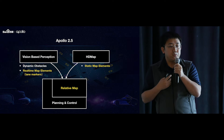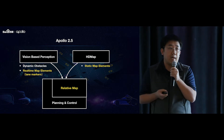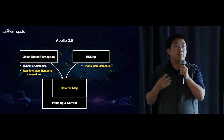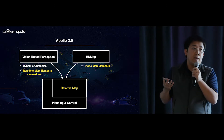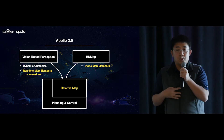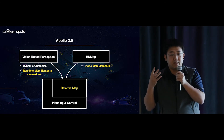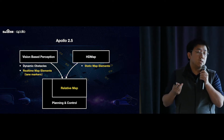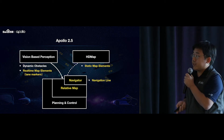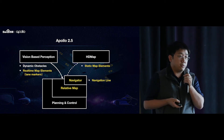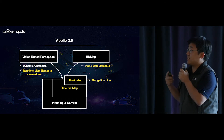Another issue we address in Apollo 2.5 is related to HD map. As we all know, HD map is not readily available for developers, and making an HD map is costly and time consuming. Without an HD map, it's very hard to test Apollo on the road. To solve that issue, we introduced the navigator module, which is similar to HD map in that it provides static map elements.